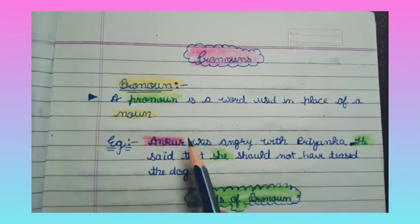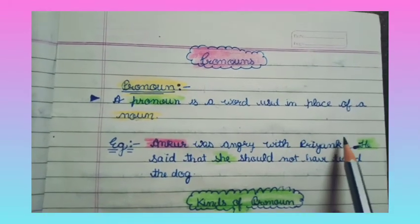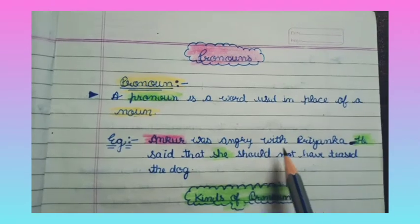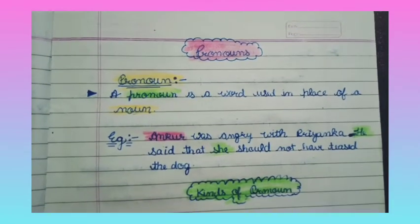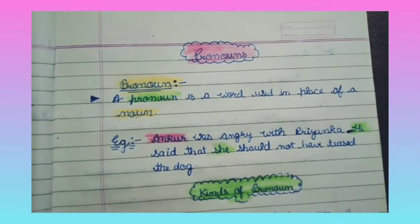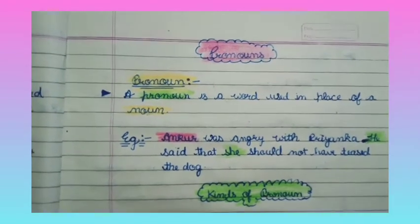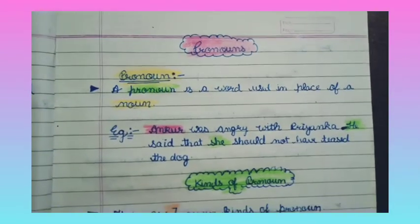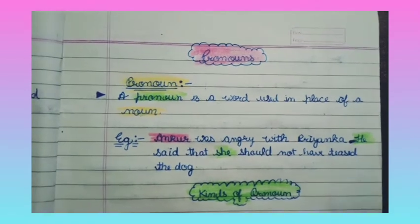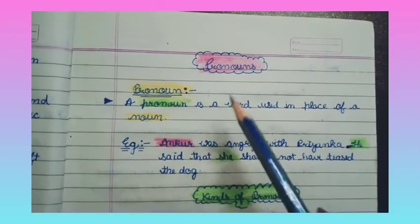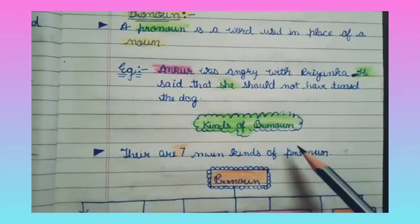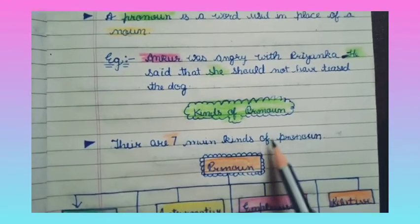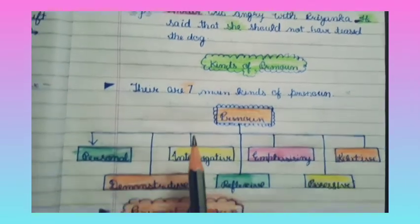If we say 'Ankur was angry with Priyanka. Ankur said that Priyanka should not have teased the dog,' repeating the names does not sound very nice. That is why we use pronouns. There are seven types of pronouns — let's study them.